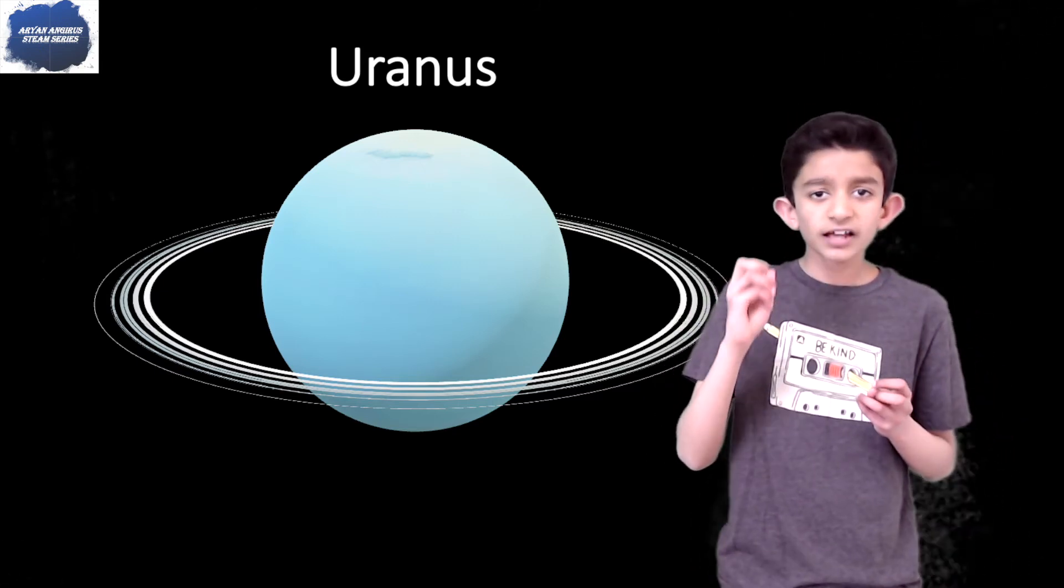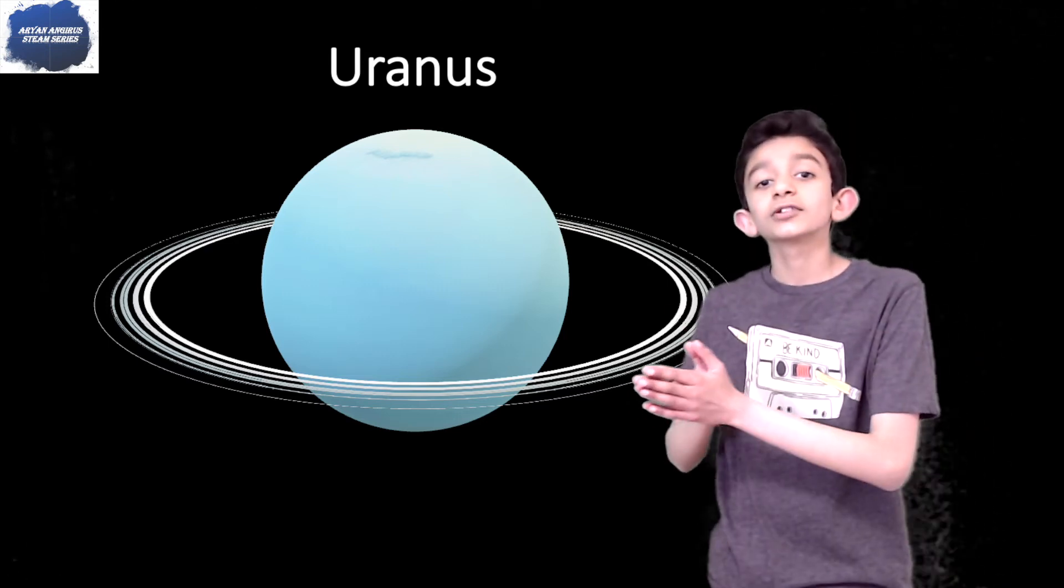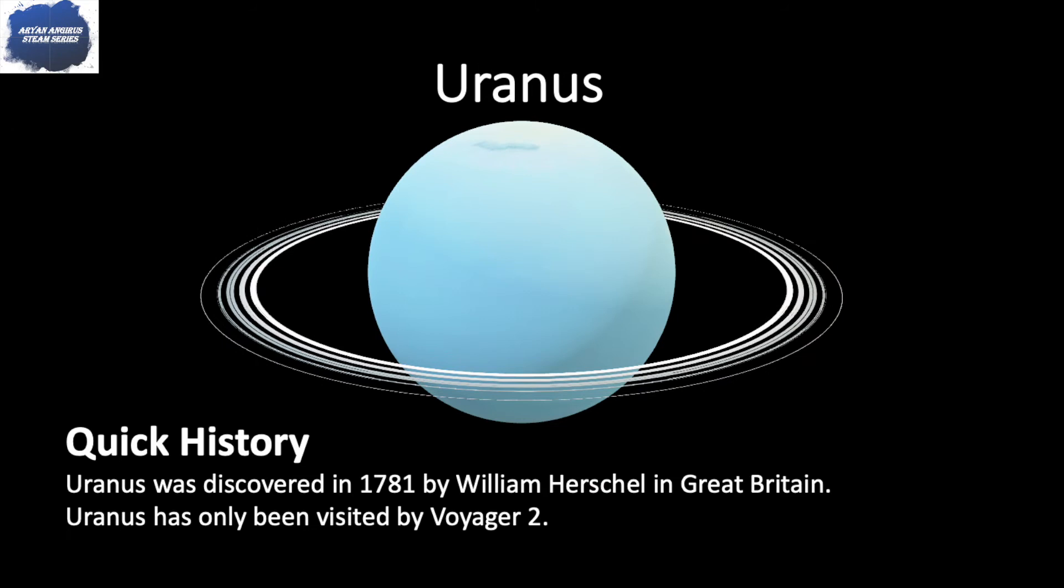Since Uranus is the 7th planet away from the Sun, Saturn and Neptune are its neighbors. Uranus was discovered in 1781 by William Herschel in Great Britain. Uranus has only been visited by Voyager 2.